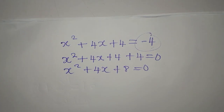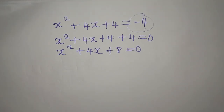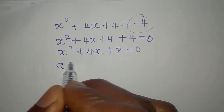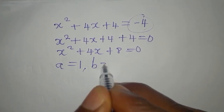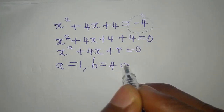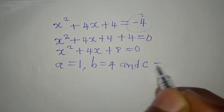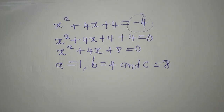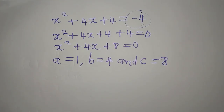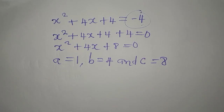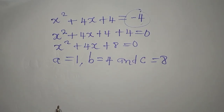We are going to solve this by using the quadratic formula. The formula has a, b, and c. Our a is 1 — that is the coefficient of x squared. Our b is 4, and our c is equal to 8. Remembering the formula is not always easy for some learners, so let's write the formula here.